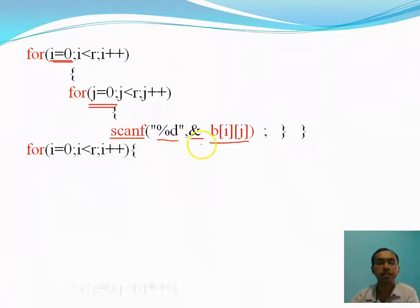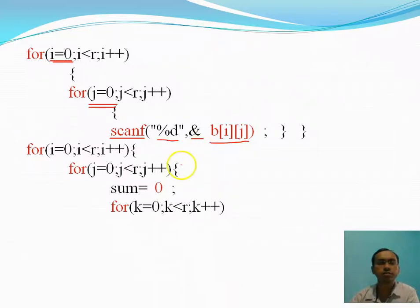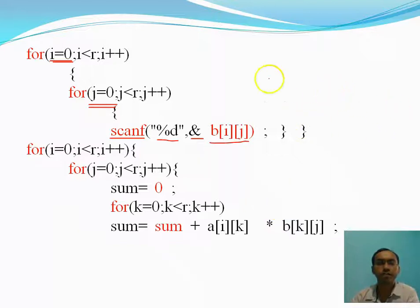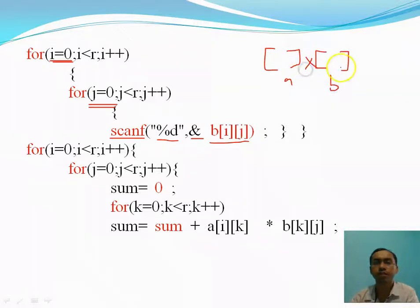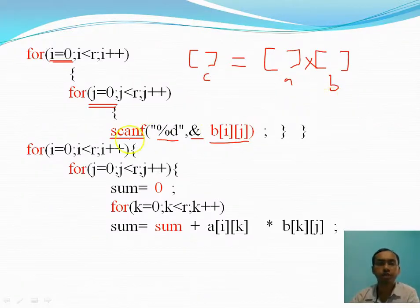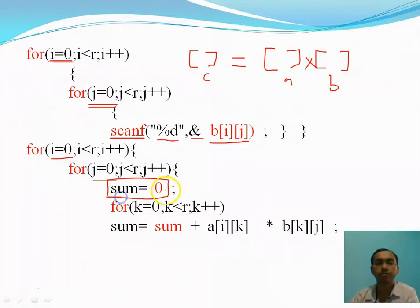After entering the values, we initialize sum to zero. We are writing code for the multiplication of two matrices — we will take matrix A and matrix B, multiply them, and store the result in matrix C. For multiplication, we will write 3 for loops: one for i, one for j, and we have already stored sum as 0. If we don't store 0, it will take a garbage value. The third loop runs from 0 to less than r with k++.